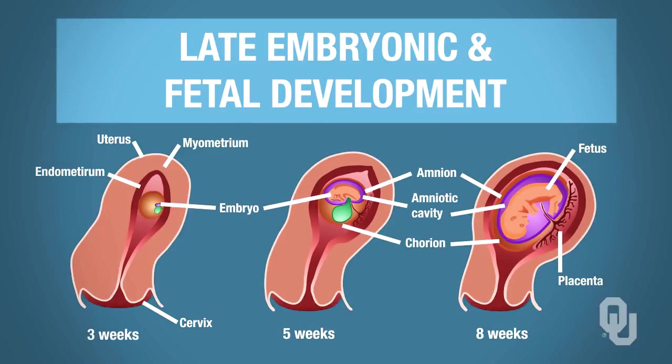By eight weeks, the placenta has developed. We're not going to go into details on the exact physiology of the placenta, but the placenta is allowing for exchange of gases and nutrients between the fetus and the mother—between the circulation of the fetus and the circulation of the mother, or maternal and fetal circulation.